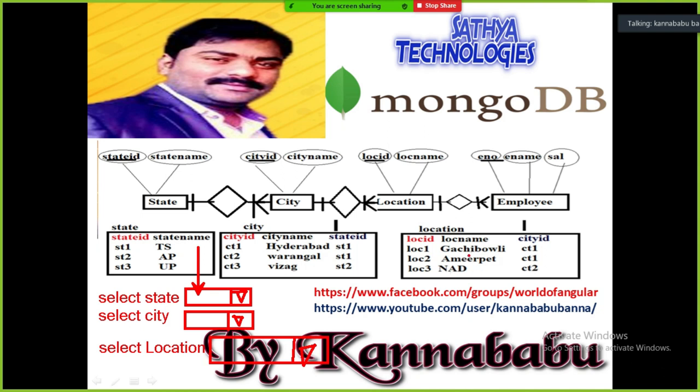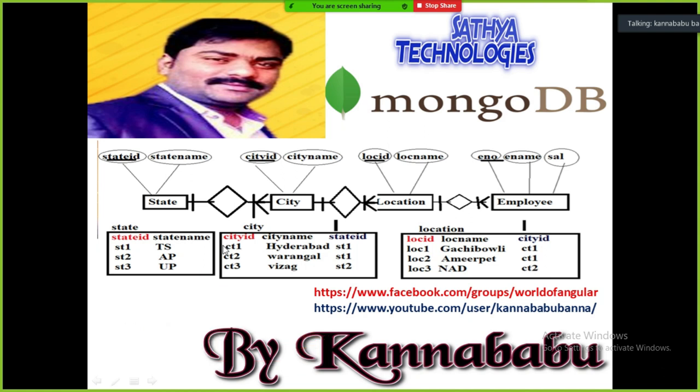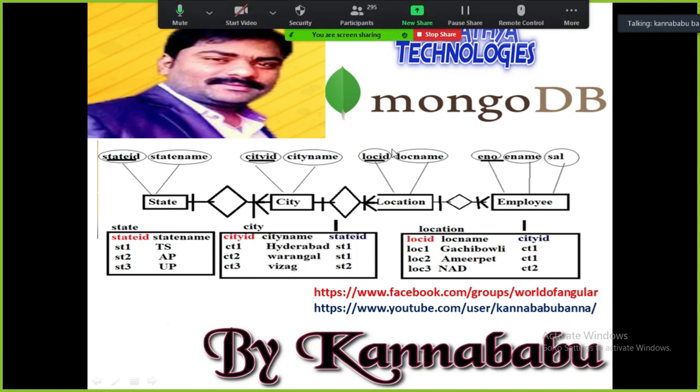When multiple tables are existing in relational databases, fetching the data from multiple tables is a tedious task. You have to use join queries or sub-queries to fetch the data. In RDBMS, the data is stored in structured format — the schema is maintained and the structure of the table is fixed.